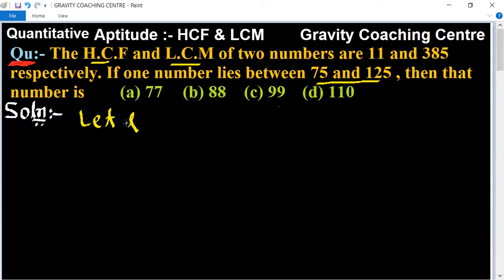Let the two numbers be 11x and 11y, because 11 is the HCF. And we know that the product of numbers, 11x into 11y, equals the product of HCF into LCM.